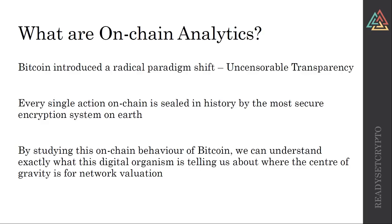The function of proof of work with the ever-increasing hash rate effectively secures anything that happens on-chain, immutably forever. We can see all of those transactions, and when we start studying the behavior of Bitcoin in this regard, we can actually see what arguably the first digital organism to ever exist is telling us about the center of gravity for its network valuation. The on-chain information includes things like transaction flow in BTC, hash rate, difficulty adjustments, and everything contained within the UTXO set — that's what I personally refer to as intrinsic data to Bitcoin.